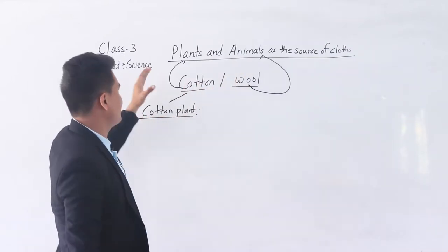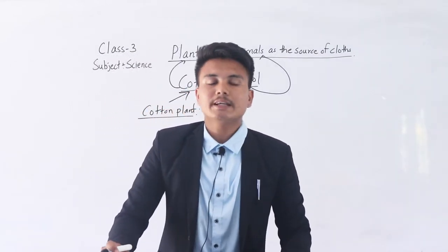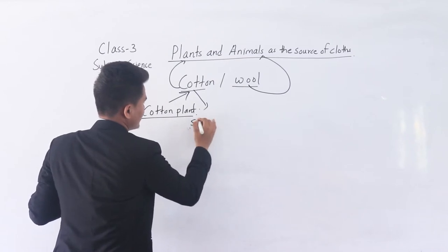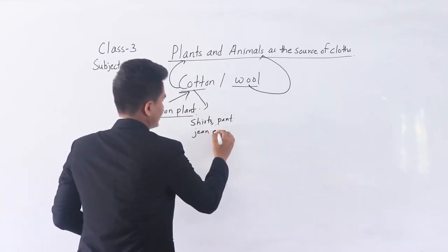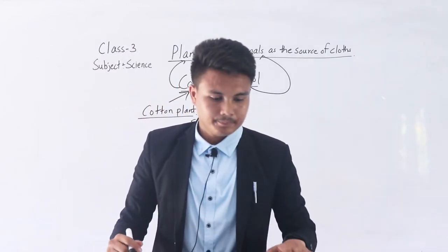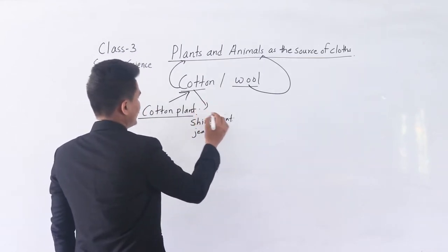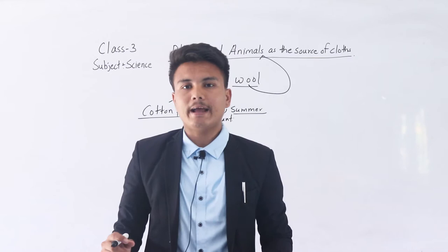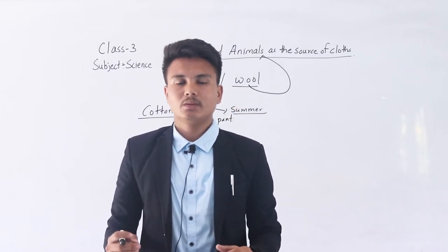Cotton is produced from the cotton plant. Some cotton clothes we can see are shorts, pants, and jeans. Cotton clothes are comfortable — we wear cotton clothes in summer season. They are soft, they absorb water and sweat easily, and they are good in quality and strength.